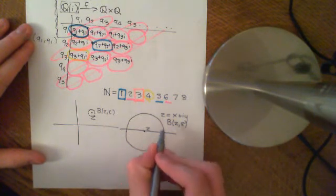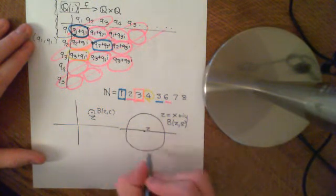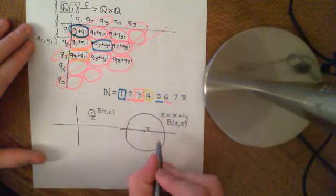is that there is a rational number within this ball, within this open ball of size epsilon.